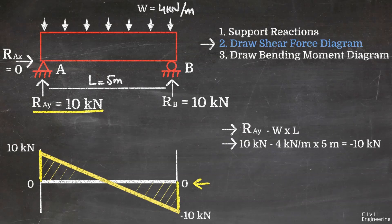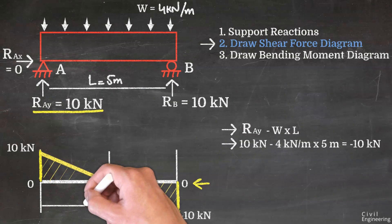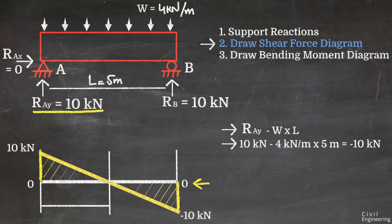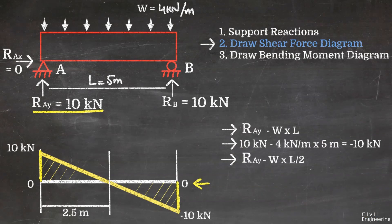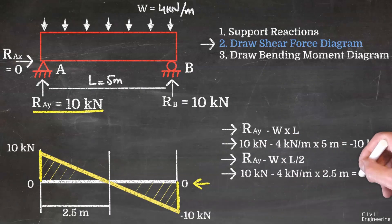At the midpoint, which is at a distance of 2.5 m, the shear force equals RAY minus W×(L/2) = 10 − (4×2.5) = 0. So the shear force is zero at the midpoint of the beam.